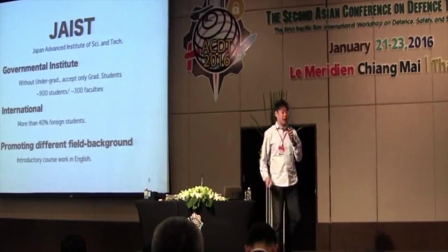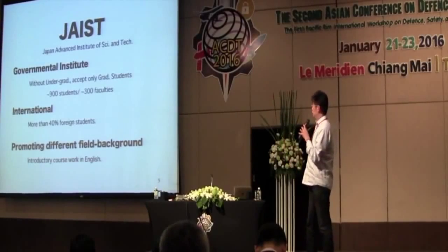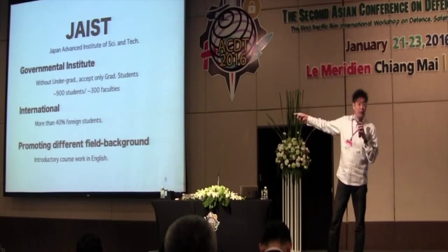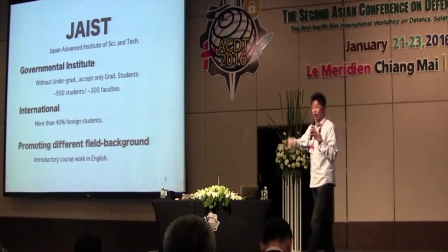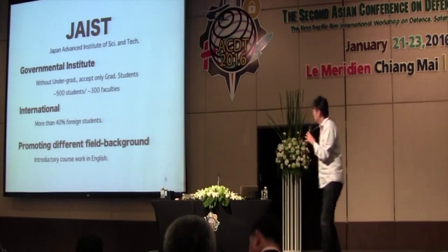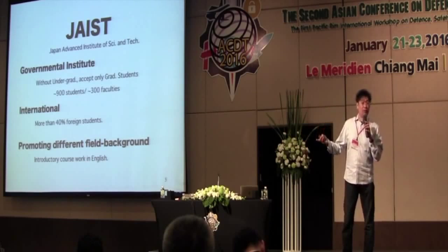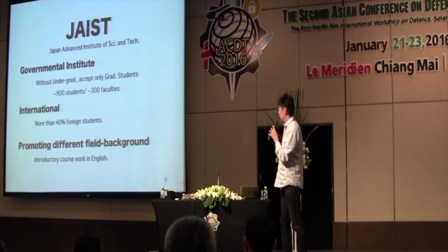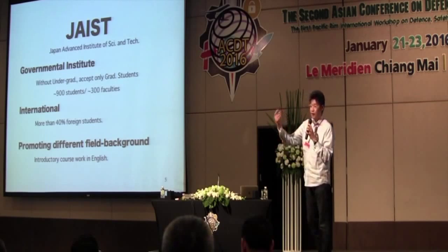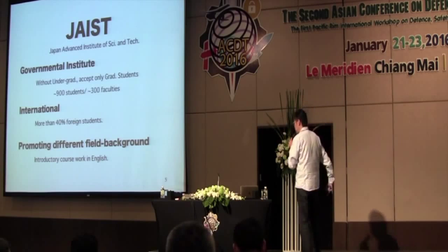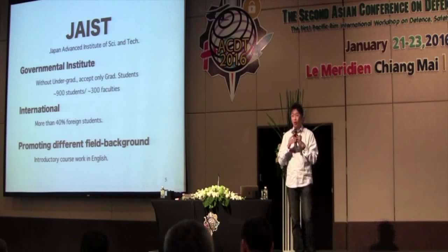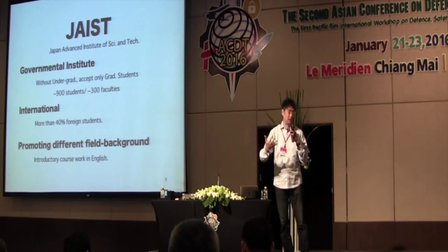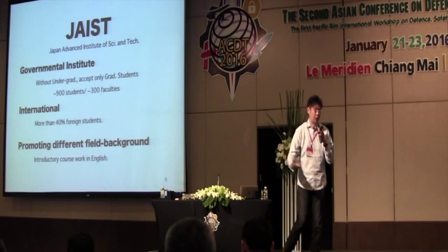JAIST is one of the governmental institutes with only 900 students, while the faculty number is 300 — so a larger cost and performance ratio per student. More than 40% of the students come from foreign countries, so the campus is very international. Students come from different field backgrounds, including my two Thai students, who are not from physics or chemistry backgrounds but are now enjoying the research.